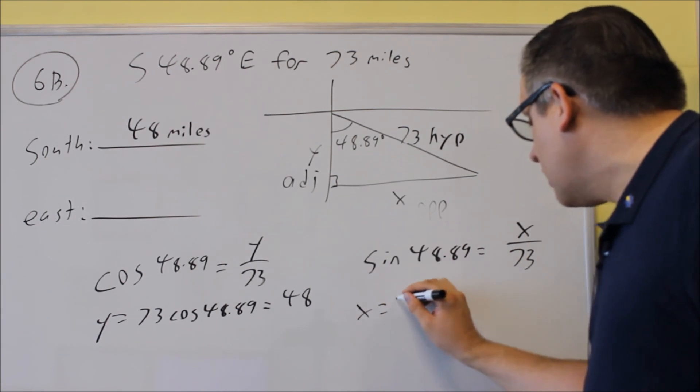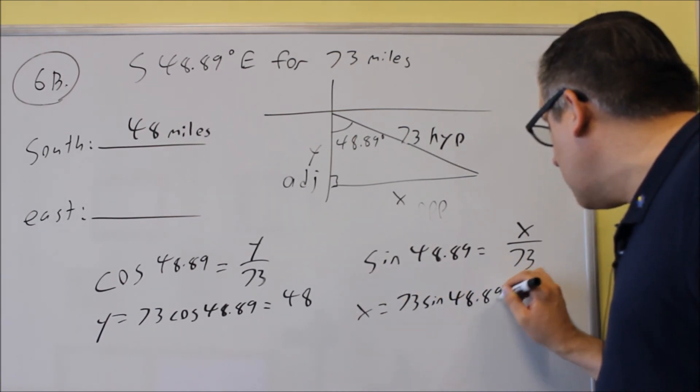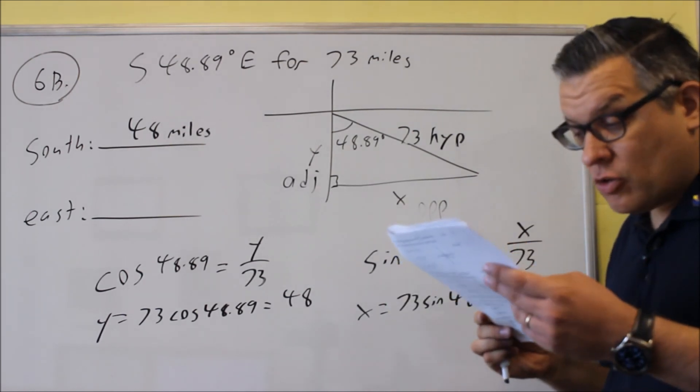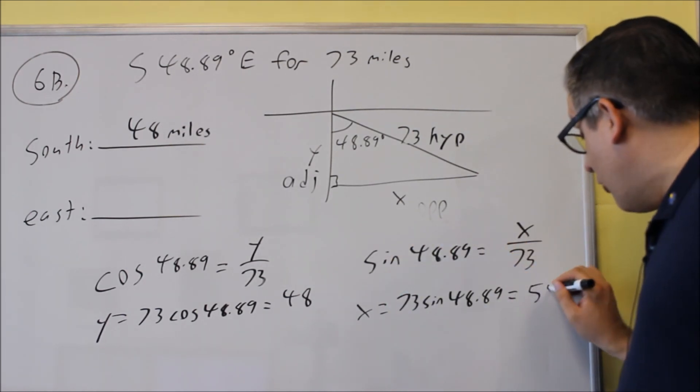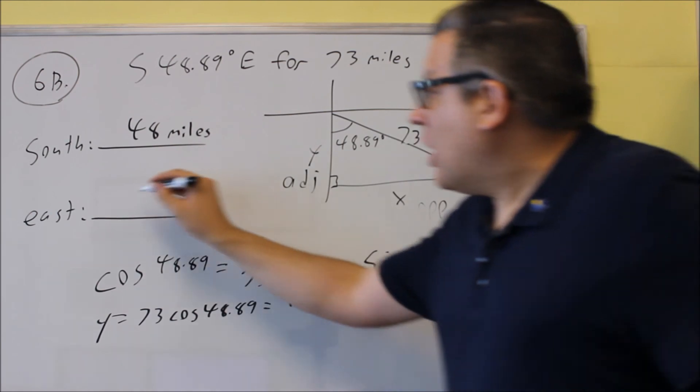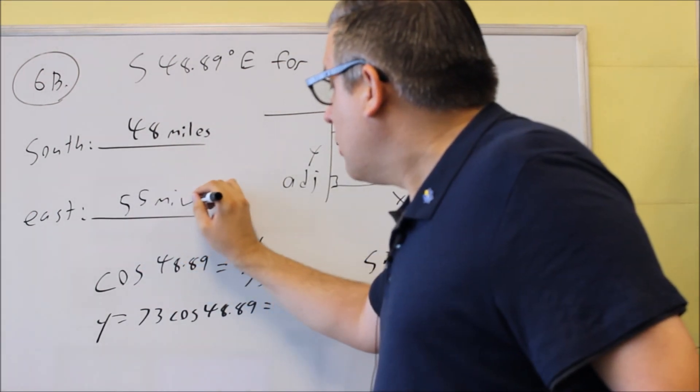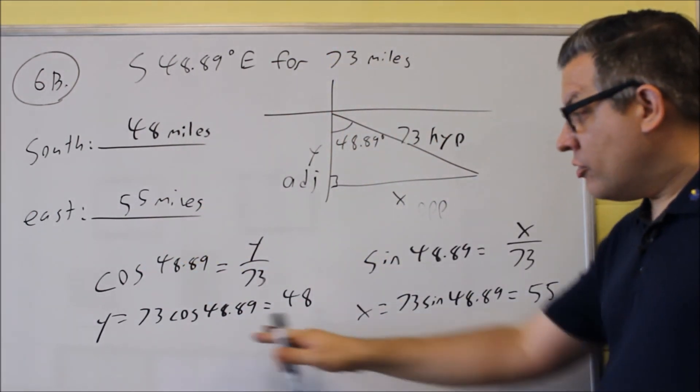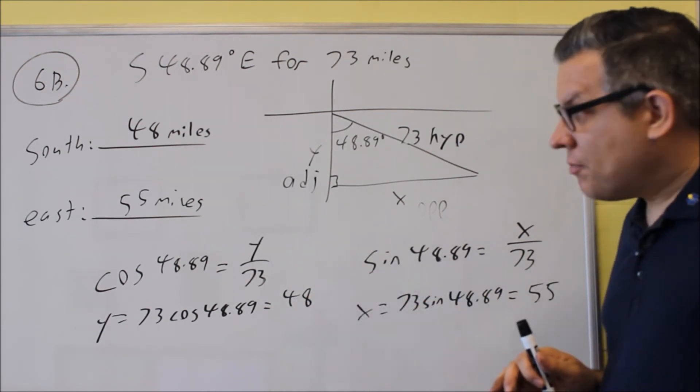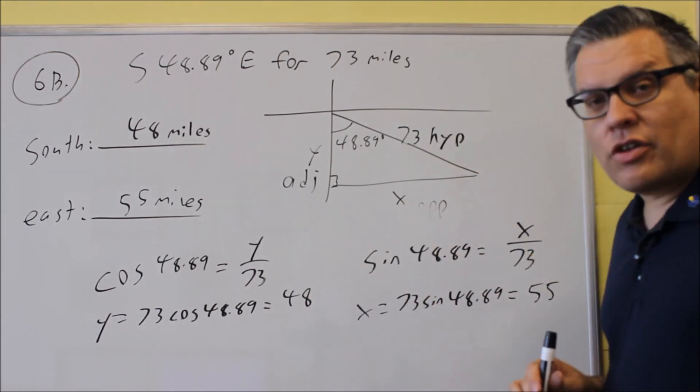So sine 48.89 is equal to opposite over hypotenuse. So opposite is x over hypotenuse 73. We cross-multiply on that, 73 sine of 48.89. And we multiply that out, we're going to get 55 miles. And this is going to be what we'll put here in the blank. So again, we do trig function for each one, and that gives us the south and the east.